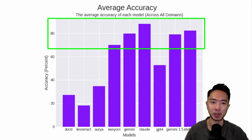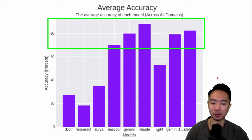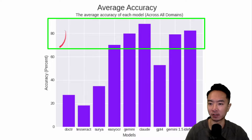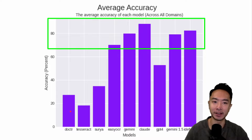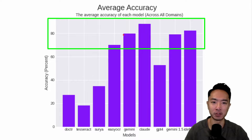Now let's first dive into accuracy, probably the most important metric. Here is a chart showing the different models and their accuracy. Models like Easy OCR and the LLM models have pretty high accuracy — around the 80 range — which is very good across all domains. The other ones like DOCTR and Tesseract are much lower. So if you're looking for high accuracy, I would recommend some of the LLM methods or Easy OCR. But of course, you really want to test it on the specific domains you're working with.